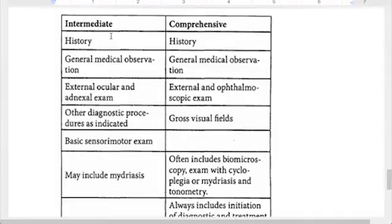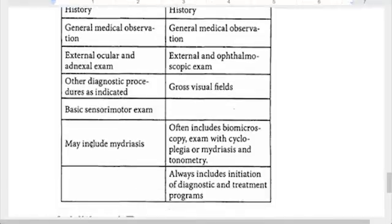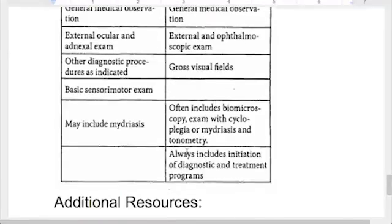I like to do side-by-side comparisons: intermediate versus comprehensive eye codes. They both require a history and a general medical observation. Intermediate does an external ocular and adnexal exam — looking at surrounding structures to the eyeball — while comprehensive does the external and the scope of the eye. Intermediate includes other diagnostic procedures and gross visual fields, plus a basic sensory motor exam, and may include eye drops. Comprehensive often includes a biomicroscopy exam, cycloplegia drops, and tonometry to measure the pressure of the eye — definitely more involved. And again, comprehensive always includes initiation of diagnostic and treatment programs.